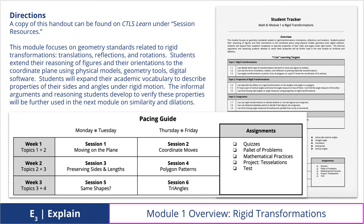This module focuses on geometry standards related to rigid transformations — translations, reflections, and rotations. Students extend their reasoning of figures and their orientations to the coordinate plane using physical models, geometry tools, and digital software. Students will expand their academic vocabulary to describe properties of their sides and angles under rigid motions.